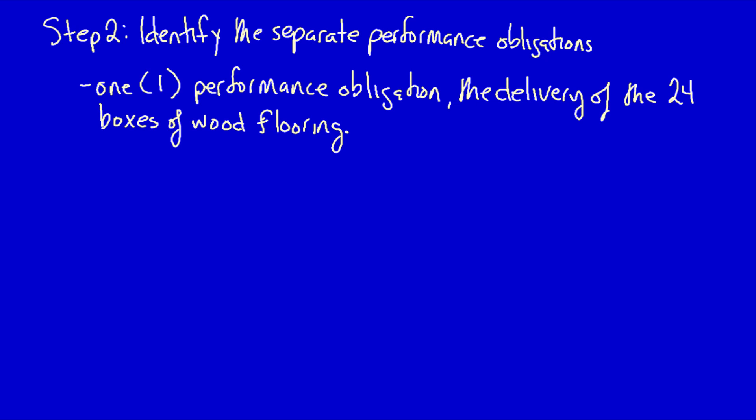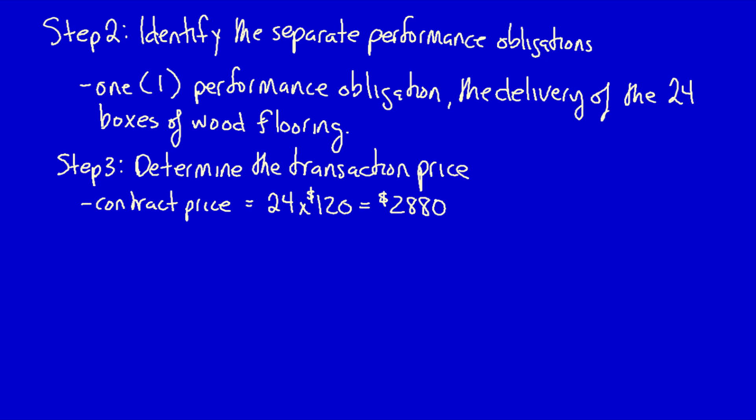Let's move on to step 3. Determine the transaction price. The price specified in the contract is $120 per box with 24 boxes sold, $2,880. However, this transaction price is variable due to the customer's right of return. Because customers can return up to 100% of the unused wood flooring, it's true that the actual revenue earned will be variable by customer.